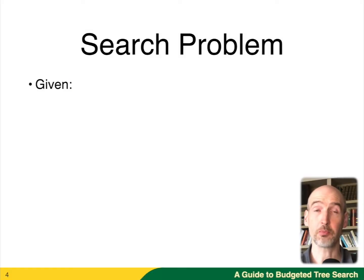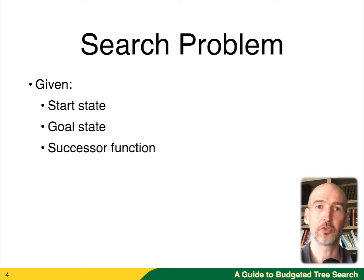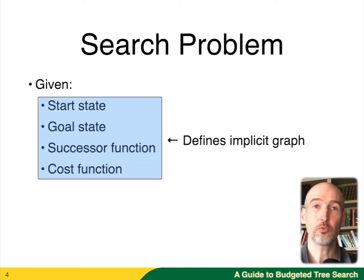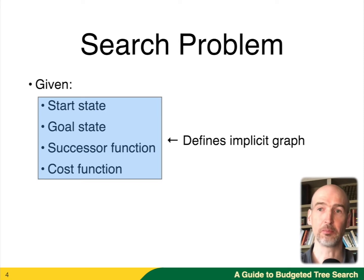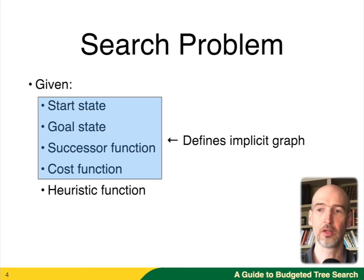Generally speaking, a search problem is defined by a start state, a goal state, a successor function, and a cost function. These four things put together give us an implicit graph. Many problems will not fit in memory, therefore we'll need to use something like a depth first search to fit the problem in memory, and we get that from this implicit graph. We also have a heuristic function which estimates these costs.